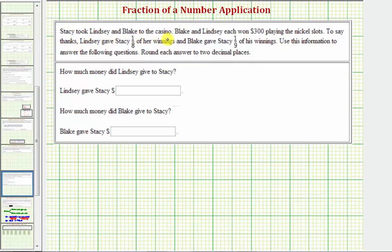Stacy took Lindsey and Blake to the casino. Blake and Lindsey each won $300 playing the nickel slots. To say thanks, Lindsey gave Stacy 1/8 of her winnings and Blake gave Stacy 1/9 of his winnings. We're going to use this information to answer the following questions, and we're asked to round to the nearest cent or two decimal places.